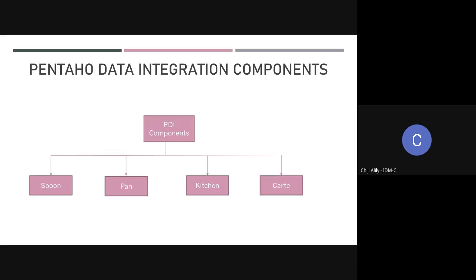Rather than having to write code like JavaScript or XML, Pentaho has a GUI called Spoon where you can drag and drop and create transformations for data migration. As you use the GUI and build your transformations, Pentaho automatically creates an XML file on the back end that has the code for those transformations and jobs.